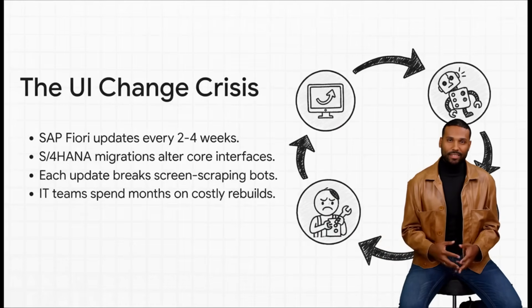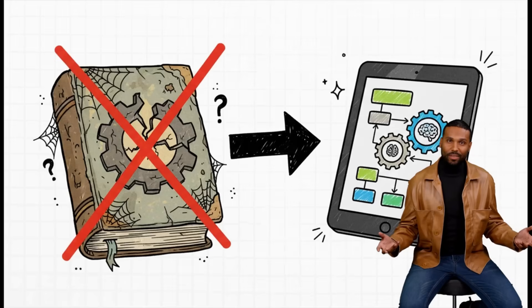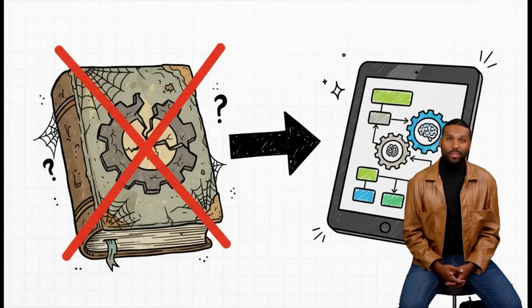And this leads to a full-blown crisis. SAP updates constantly, which means your bots constantly break. So it's pretty clear we need a new approach, a modern playbook built for today's SAP.